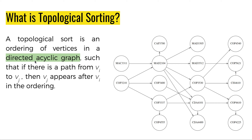I have specified a criterion that it should be a directed acyclic graph. If it is not acyclic — if there are cycles — for example if there is an arrow from CAP 3700 to MAC 3311, then we will not be able to identify where we should start studying the courses. If someone has to take MAC 3311 they must complete CAP 3700 first, but to study CAP 3700 they must complete MAC 3311 again. This is the problem with a cyclic graph — we cannot apply topological sorting, so the graph must be directed and acyclic.